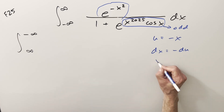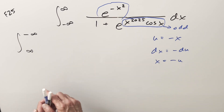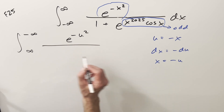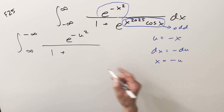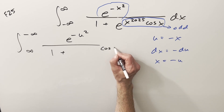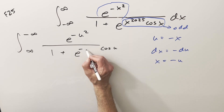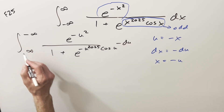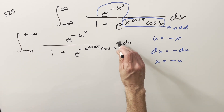For the numerator, we have x is minus u. When you plug in minus u, it gets squared and we get back the same thing, so we just have e to the minus u squared. Cosine is even, so that part becomes cosine u. The exponent on e becomes e to the minus u to the 2025. And then we have a minus sign on the du, but we can use that minus sign to reverse the bounds back.